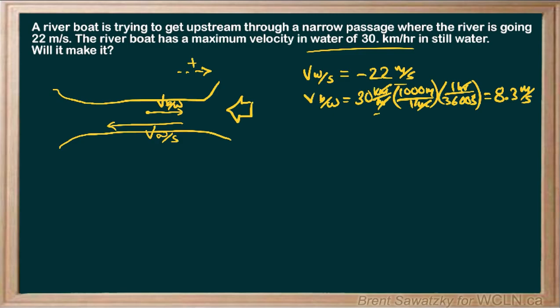So our resultant, in other words, the velocity of the boat relative to shore is equal to the velocity of the boat relative to water, plus the velocity of the water relative to shore. And so we can put those in 8.3 meters per second, positive. And we're going to subtract the 22 meters per second. Now we could write that as a plus a negative 22. Either way is perfectly fine. And we come up with a negative 13.7 meters per second.